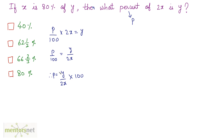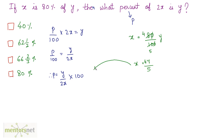Let us find Y upon 2X from what is given. X is 80 percent of Y, so X equals 80 upon 100 times Y. Simplifying, X equals 4Y by 5. Substituting into P: P equals Y upon (2 times 4Y/5), which is Y upon 8Y/5.